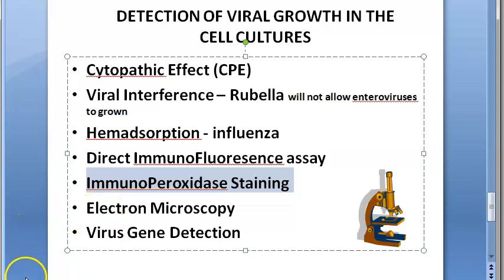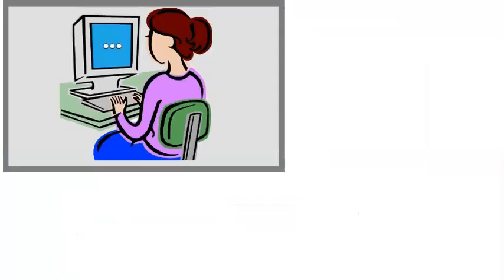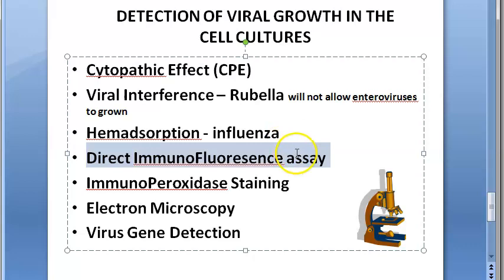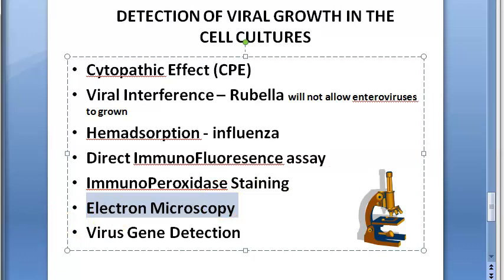In immunoperoxidase staining, cells coated with viral antigens are stained with immunoperoxidase-tagged specific antibodies and viewed under a light microscope. The key difference from immunofluorescence is the use of a light microscope here versus a fluorescent microscope there, and immunoperoxidase-tagged antibodies are used to detect the antigens.